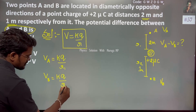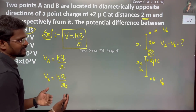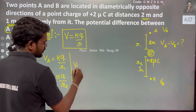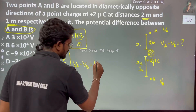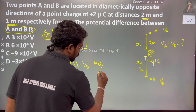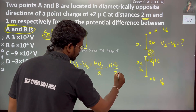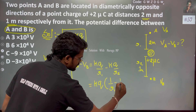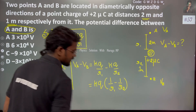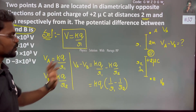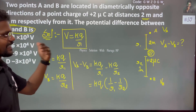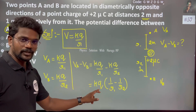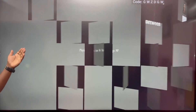So we are asking the difference between A and B: VA minus VB = kq/r1 minus kq/r2. Here r1 = 2 meters and r2 = 1 meter. The k value is 9×10⁹ and the q value is 2 microcoulombs. Let us jump to the substitution part.